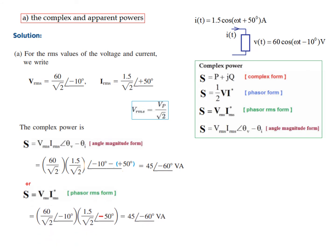You could also solve using the formula V_RMS × I*_RMS (conjugate), which is mostly preferred by engineers. We write V_RMS and I_RMS, then change the sign of I_RMS's angle for the conjugate — so +50° becomes −50°. Multiply the magnitudes and add the angles, and you get the same answer: 45∠−60°.